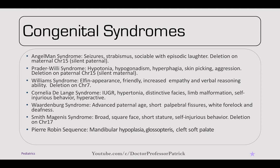Waardenburg syndrome is commonly associated with advanced paternal age and presents with short palpebral fissures, a white forelock, and deafness. Smith-Magenis syndrome presents with a broad square face, short stature, and self-injurious behavior — it's a deletion on chromosome 17. Pierre Robin syndrome presents with mandibular hypoplasia, glossoptosis, and cleft soft palate.